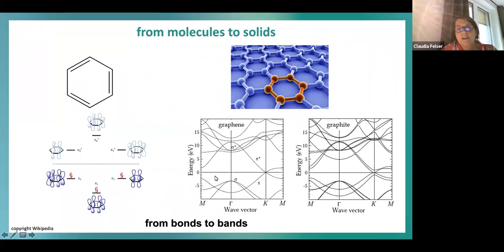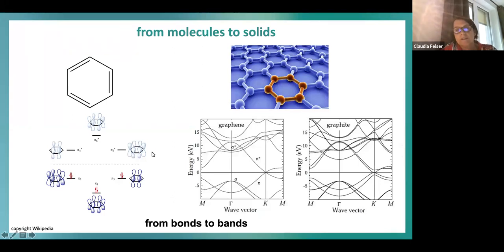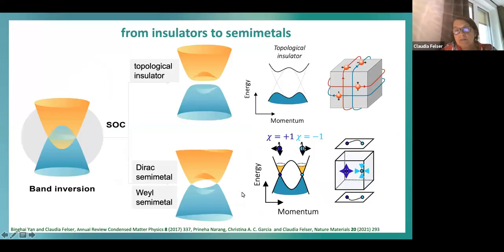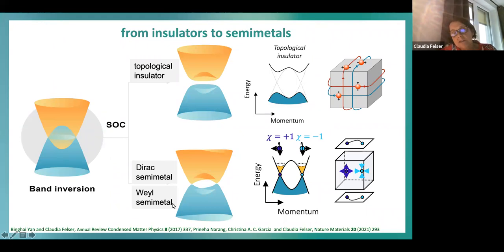We also talked about how we go from molecules to bands, and we can maybe learn a little bit from chemistry. You can draw the bands as a linear combination of atomic orbitals — this is always useful. We want to talk about semi-metals, which result from a band inversion. If we have certain points in the Brillouin zone protected by, for example, rotation symmetry, we can end up with these crossing points, and if they are at high-symmetry points they are Dirac points.